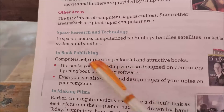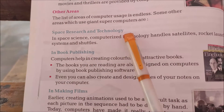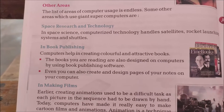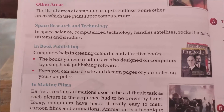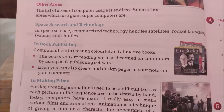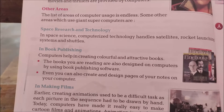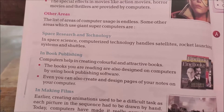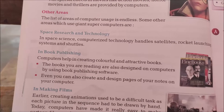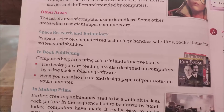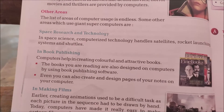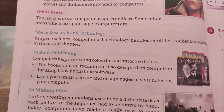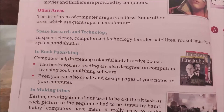The next area is space research and technology. In space science, computerized technology handles satellite and rocket launching systems and shuttles. In space research, they make sure that all the technologies — handling satellites, rocket launching — all of these use computers.